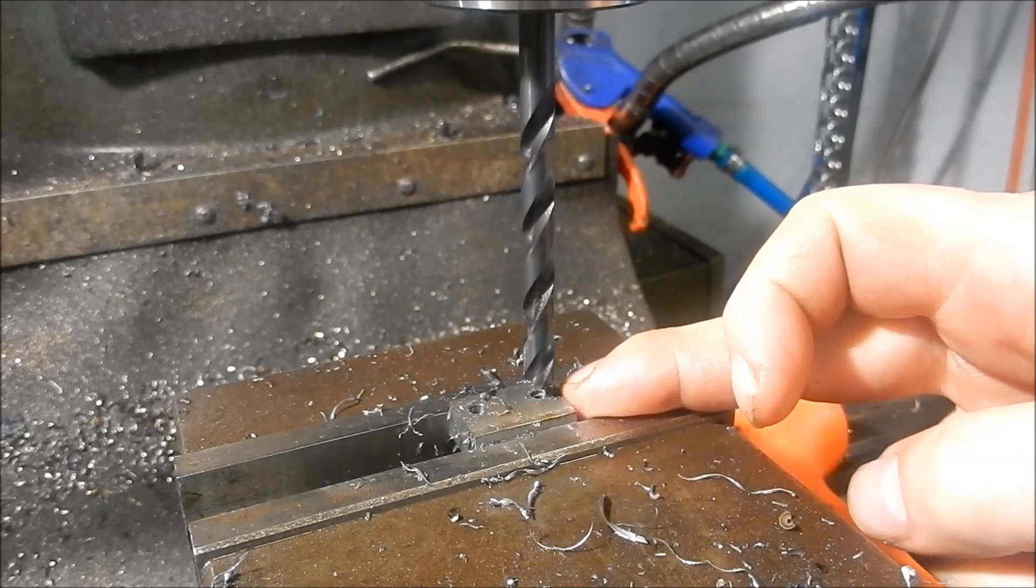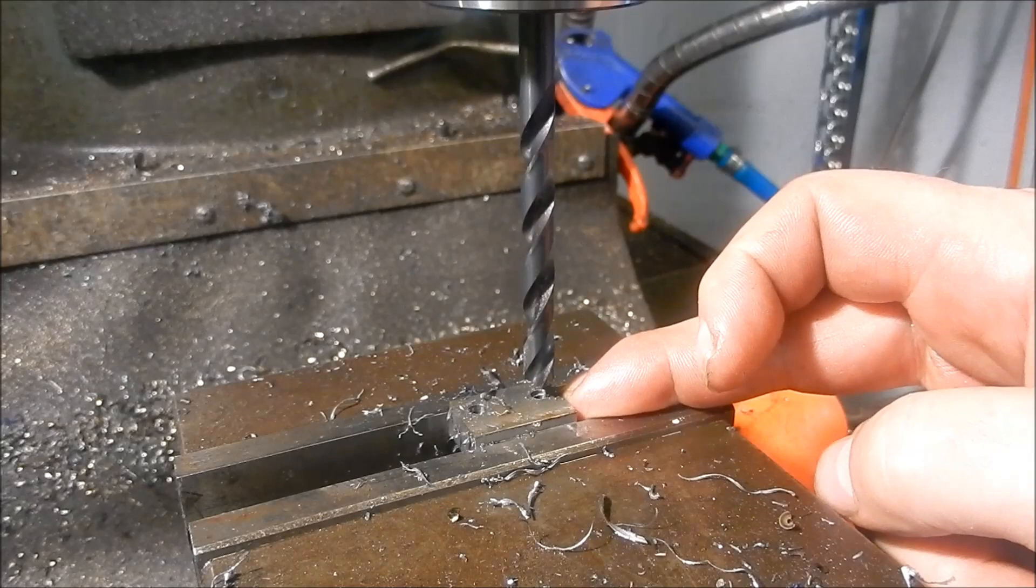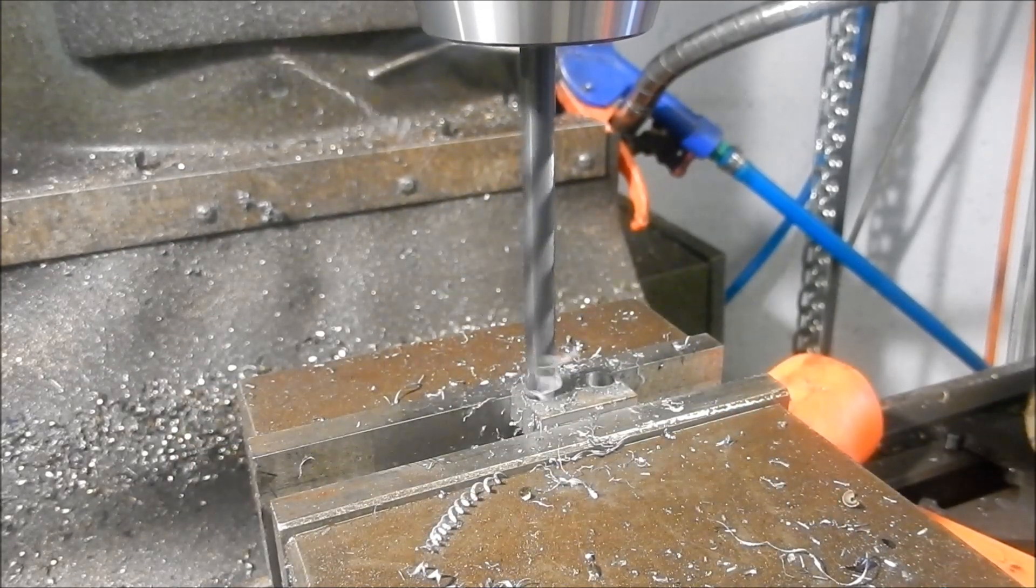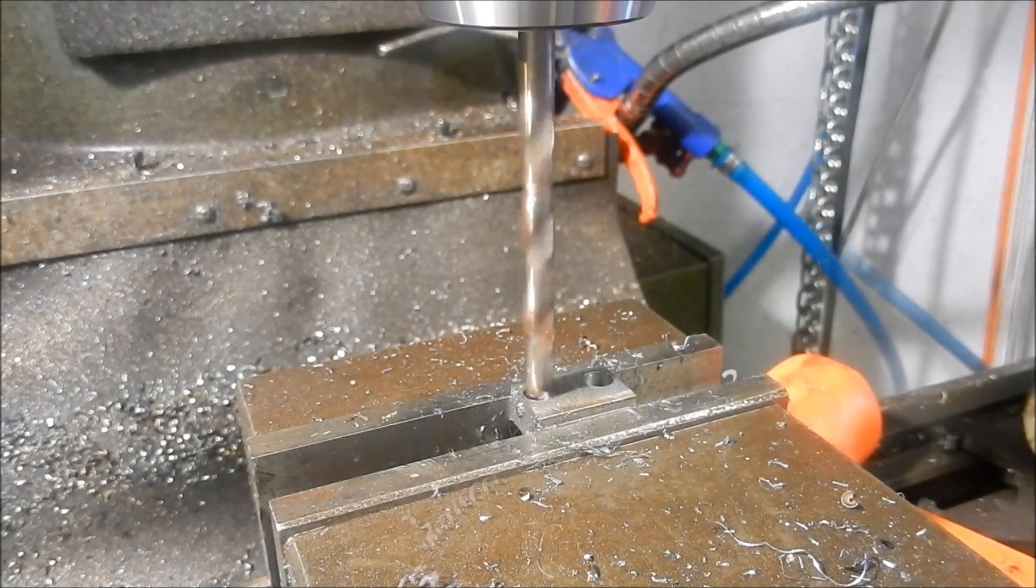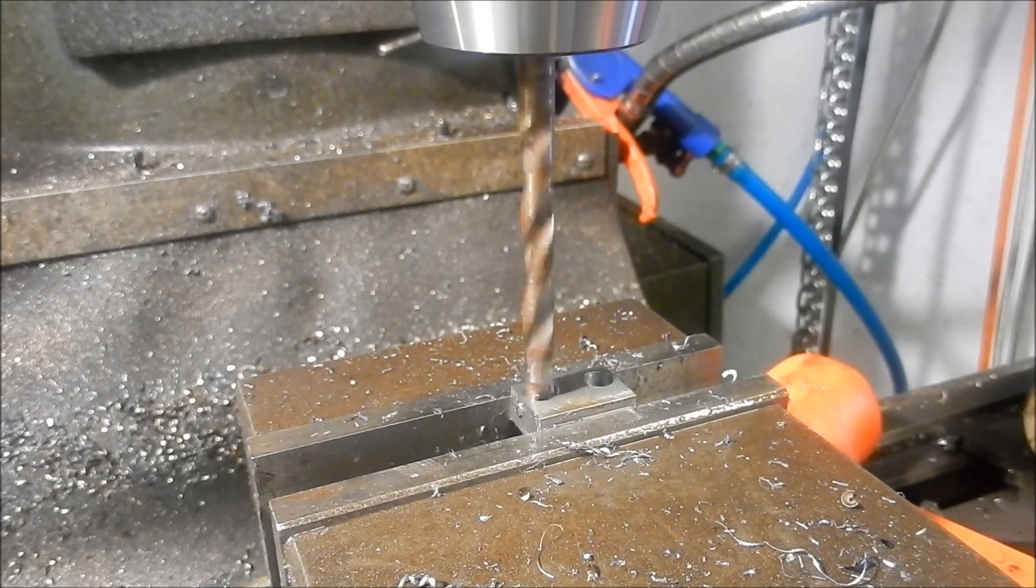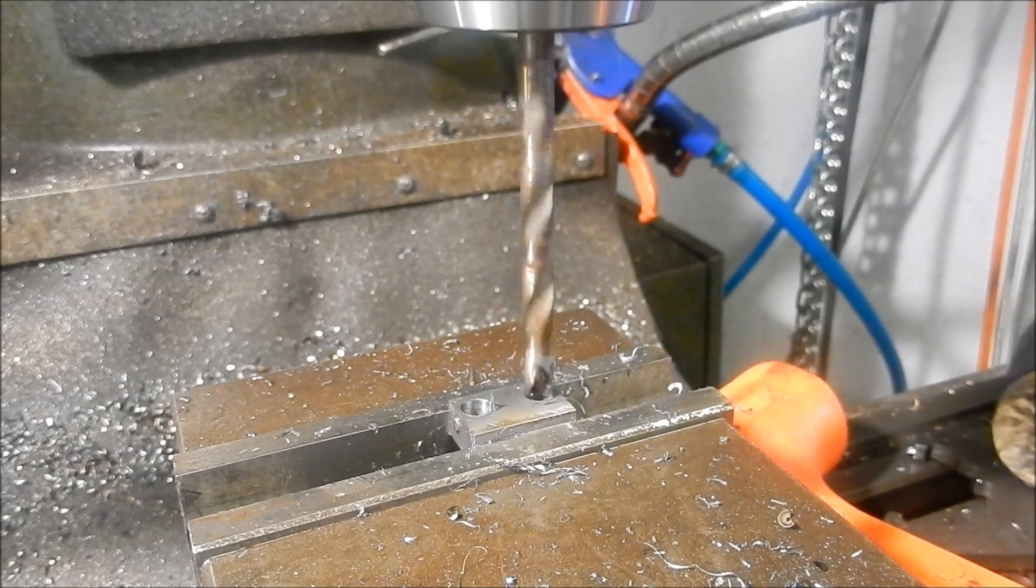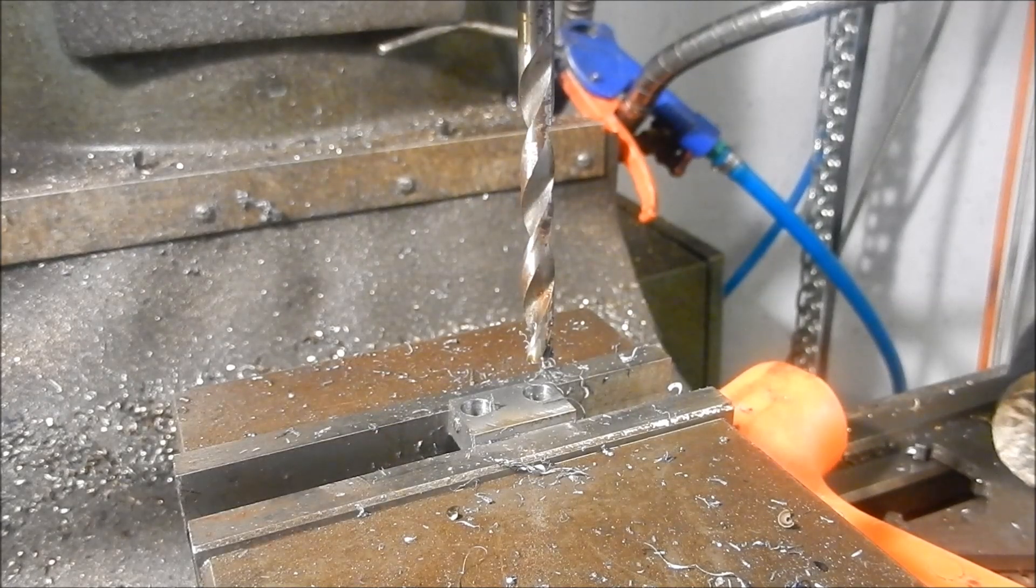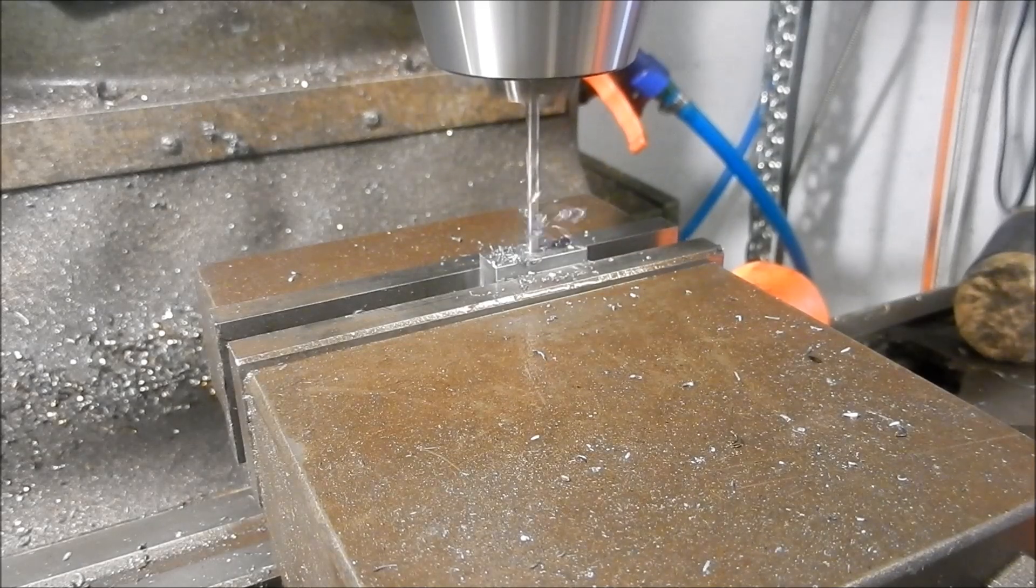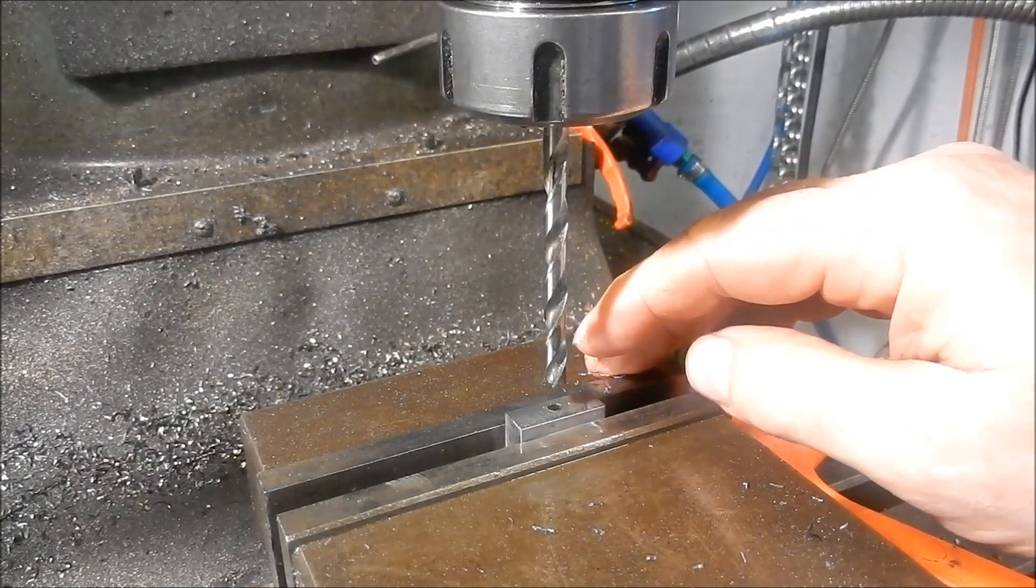Alright, we're going to create our flat bottoms for our socket head cap screws so I'm going to use my pre-ground flat bottom drill that I've got. So I go through with a standard pointer drill to get the hole started and then we'll finish it out with the flat bottom. Alright, done. We'll set up now to do the reaming.